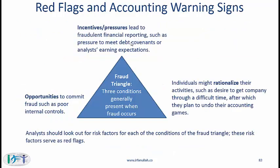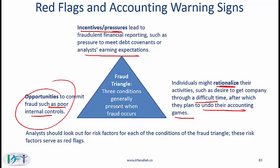This is called the fraud triangle. It shows that if three things exist, the probability of fraud is very high. The first is incentives and pressures — such as pressure to meet debt covenants or analyst earnings expectations. The second is rationalization — individuals might rationalize their activities, such as wanting to get a company through a difficult time and planning to undo their accounting games afterward. The third is opportunity — such as poor internal controls. When all three exist, the chances of fraud are relatively high.